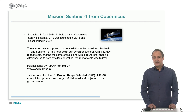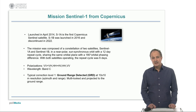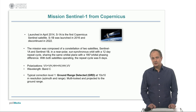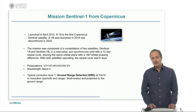The first Sentinel-1 satellite was launched in April 2014, the second in 2016, and was discontinued in 2022. The satellites of this Copernicus mission follow sun-synchronous orbits with 12-day repeating cycles each, working in C-band and providing images with single or dual polarization. One of the most used processing levels is Ground Range Detected (GRD), where images are provided at about 10-meter spatial resolution.